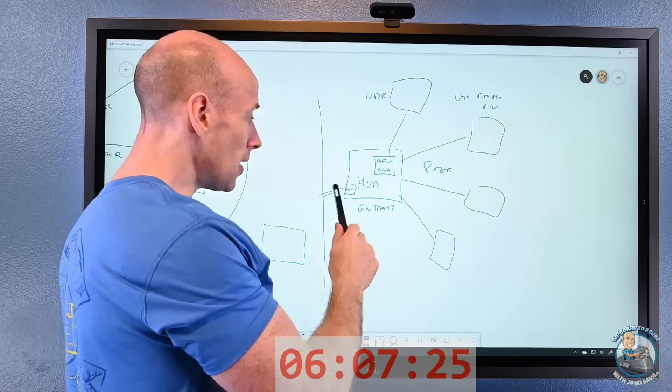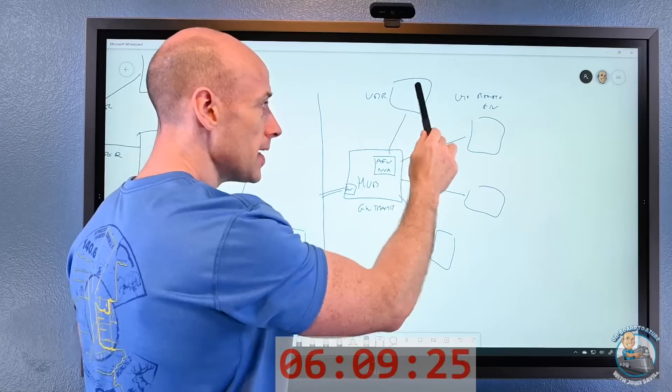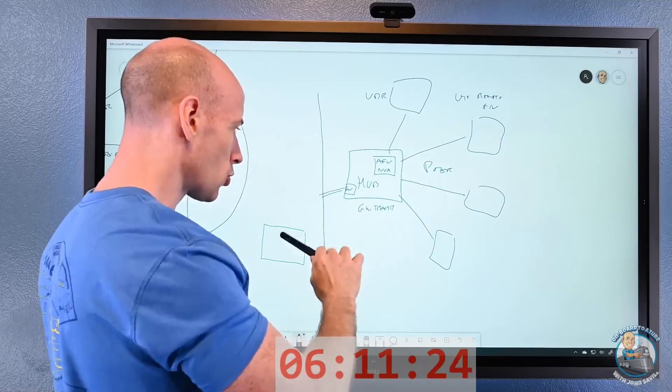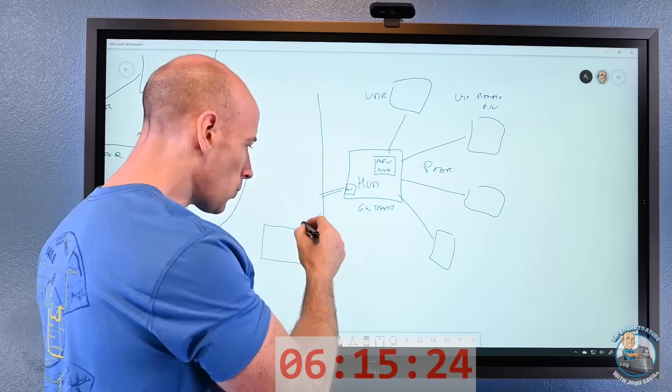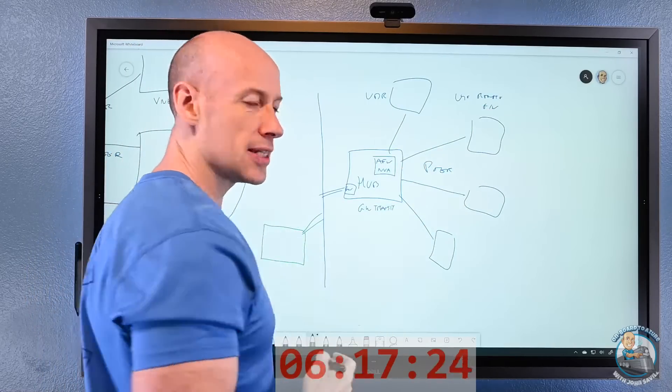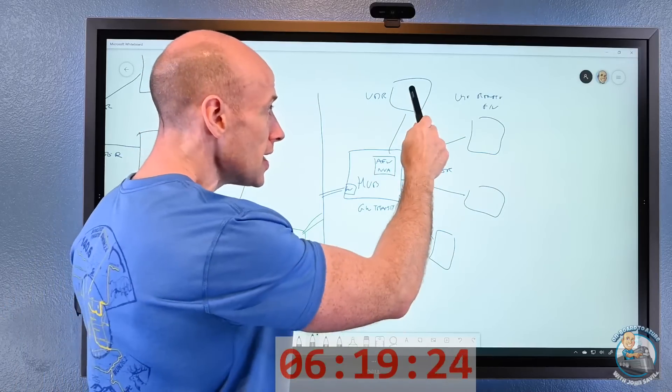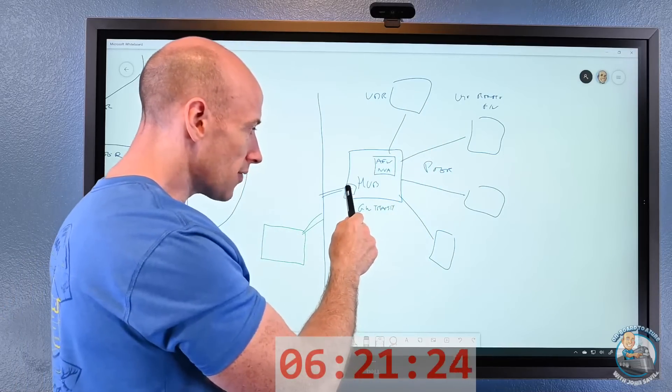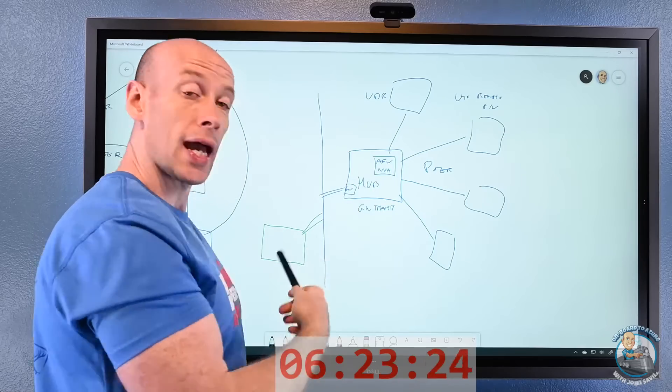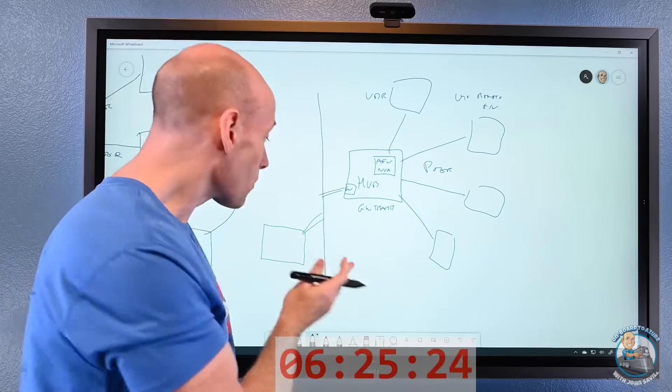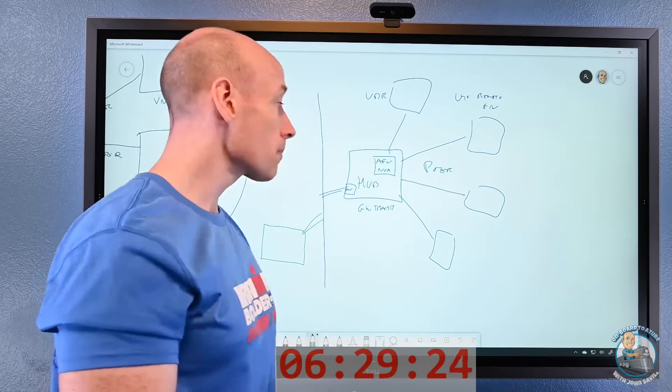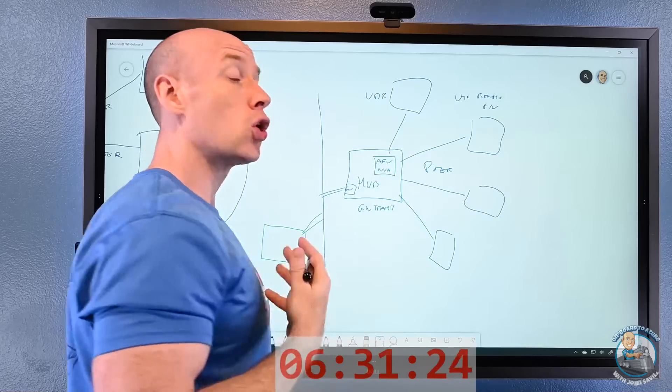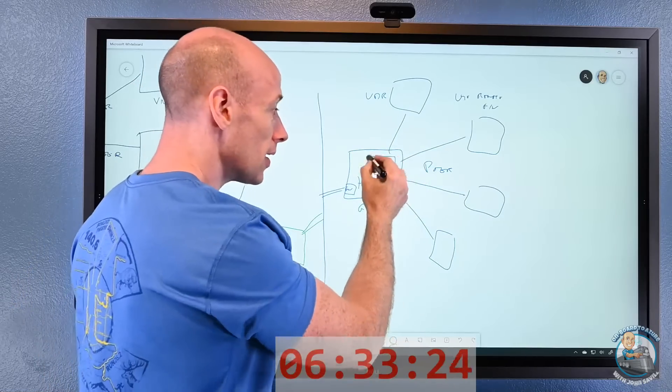What that will enable me to do is now the IP spaces of these spokes will be passed through to the targets that are connected here, and likewise this will know about those IP spaces. So these can now use the connectivity of the hub to get to the connected networks on-premises, and on-premises via the hub will be able to get to the spokes.